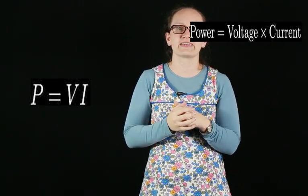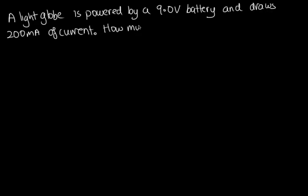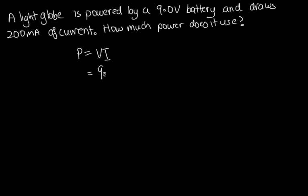Using P = VI, we can calculate how much power different components in a circuit use. For example: a light bulb is powered by a 9.0 volt battery and draws 200 milliamps of current. How much power does it use? We use P = VI. Our voltage is 9.0 volts, and our current is 200 milliamps — that's 200 times 10 to the minus 3. Solving this on the calculator, we end up with 1.8 watts. So this light globe uses 1.8 watts of power.